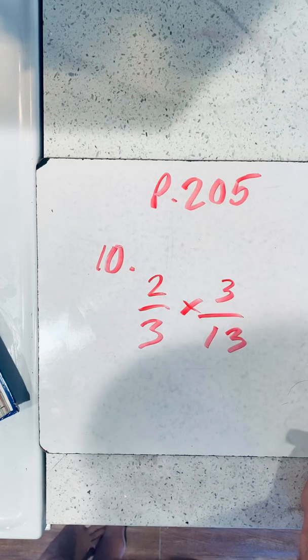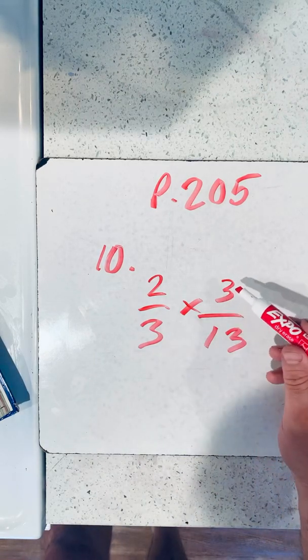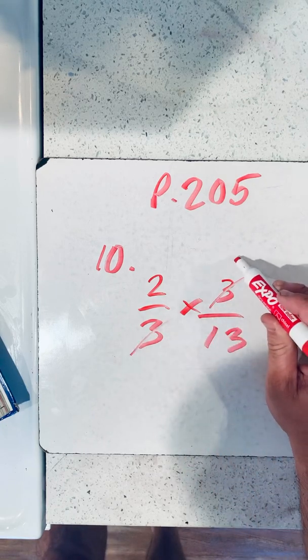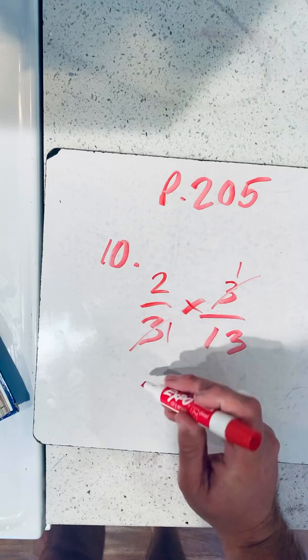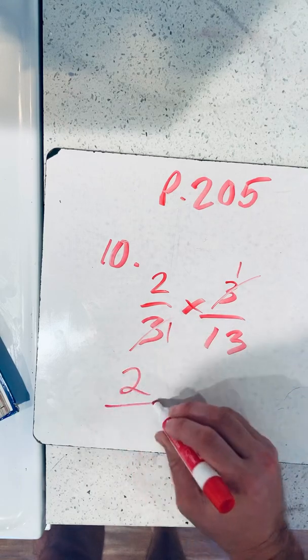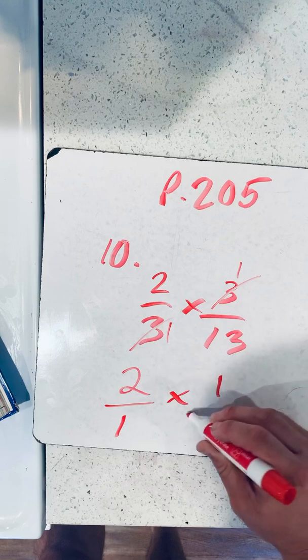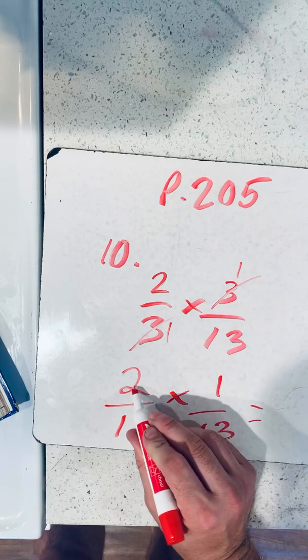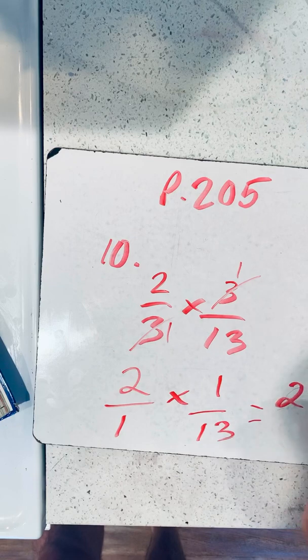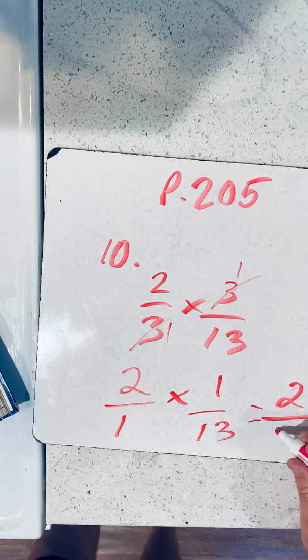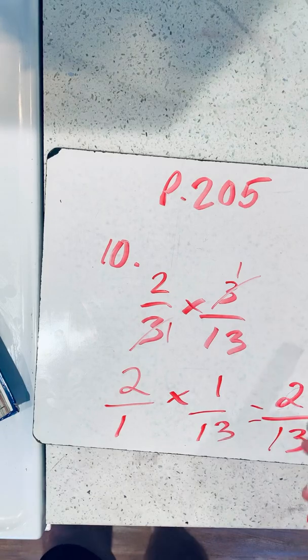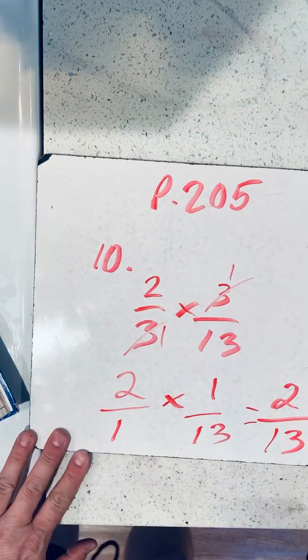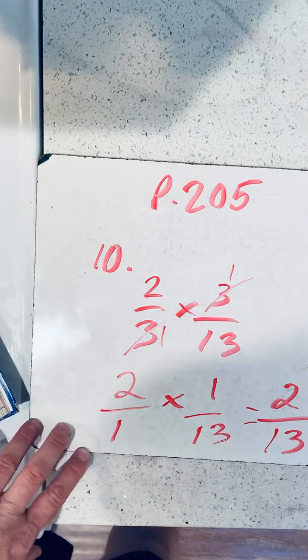So what we can do here is we can take the GCF. The ones will cancel out. 3 will be 1, 1. So that becomes 2 over 1 times 1 over 13, which equals 2 times 1 is 2, over 1 times 13, 13th. 2 thirteenths is in simplest form. So there you have it for number 10 on page 205.